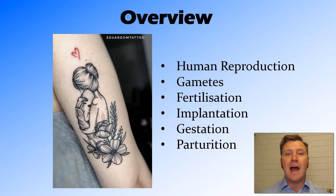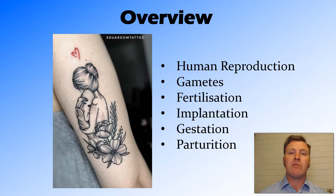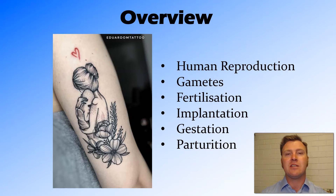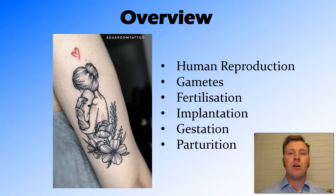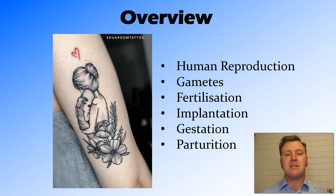In this video, we have reviewed the process of human reproduction — sexual reproduction. We've talked about the gametes, the sperm and egg, that fuse together in the process of fertilization and then implant into the uterine wall where they gestate for roughly 38 to 40 weeks before parturition, or labour, where the baby is born. Thanks for watching guys. Peace out.